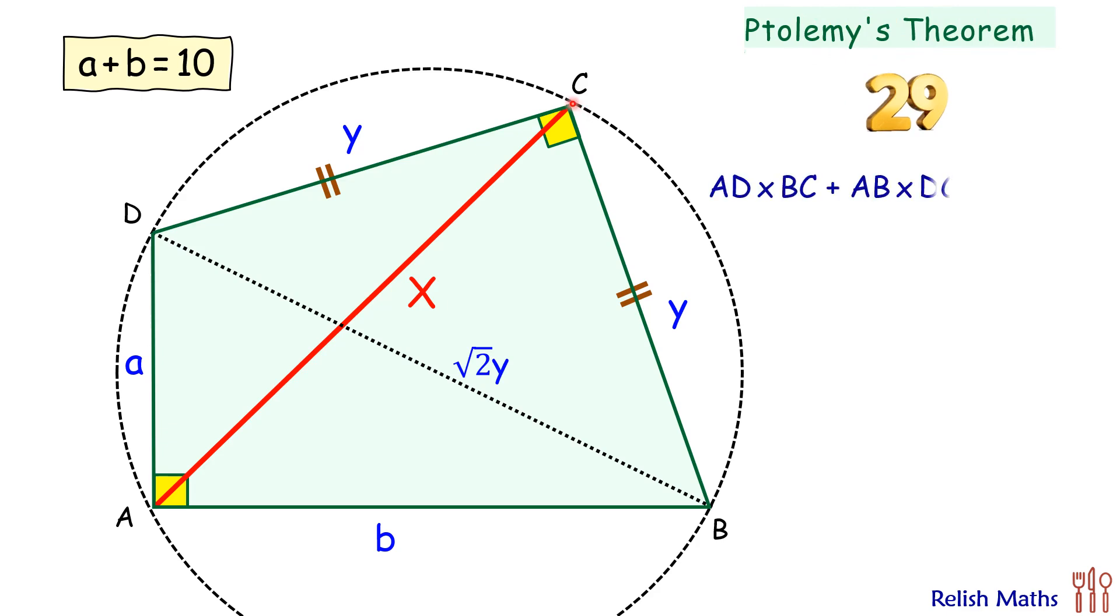As per Ptolemy's theorem, the sum of product of opposite sides, that is a times y plus b times y, will equal the product of the diagonals. So diagonals here are x and root 2y.